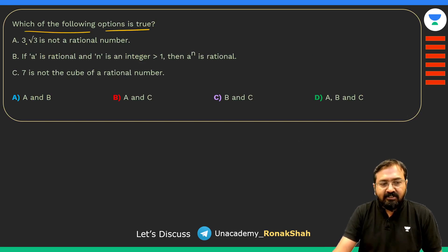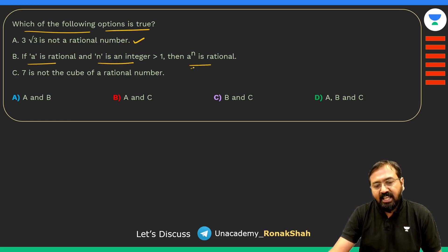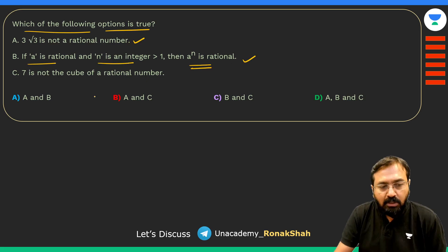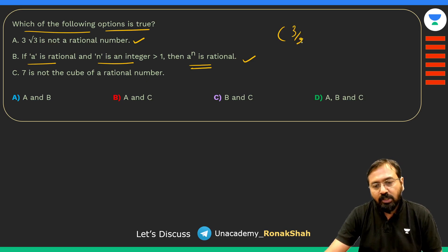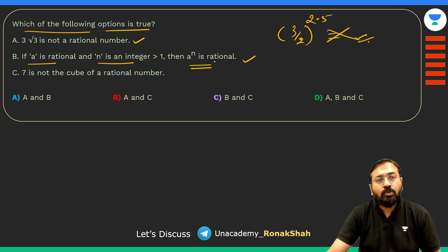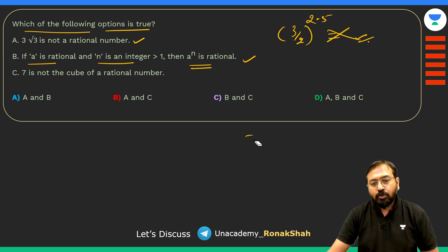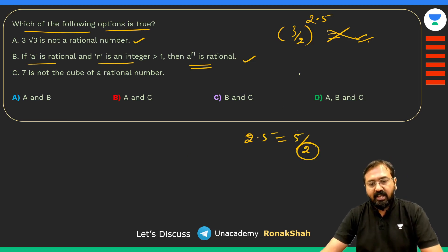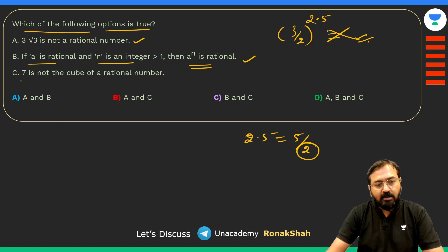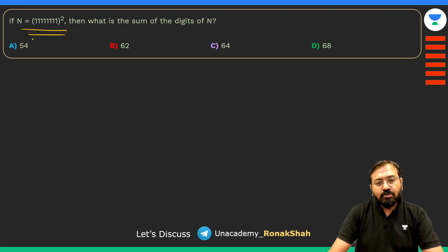Which statements are correct? Statement: 3√3 is not a rational number — correct. If a is rational and n is an integer greater than 1, then aⁿ is rational — correct for integer powers, but not necessarily for fractional powers like a^2.5 = a^(5/2), which involves a square root and may be irrational. Statement: 7 is not a cube of a rational number — true. All three statements are correct.